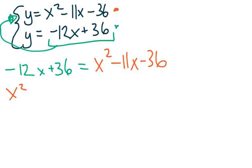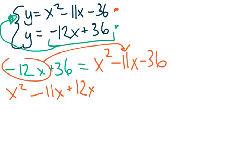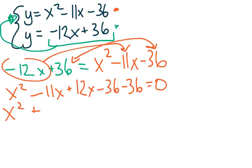x squared minus 11x, if we bring this term over to this side, that gives us plus 12x. And then if we bring this term over to this side, we get negative 36 minus another 36 equals 0. x squared plus x, negative 11 plus 12, is x minus 72 equals 0.